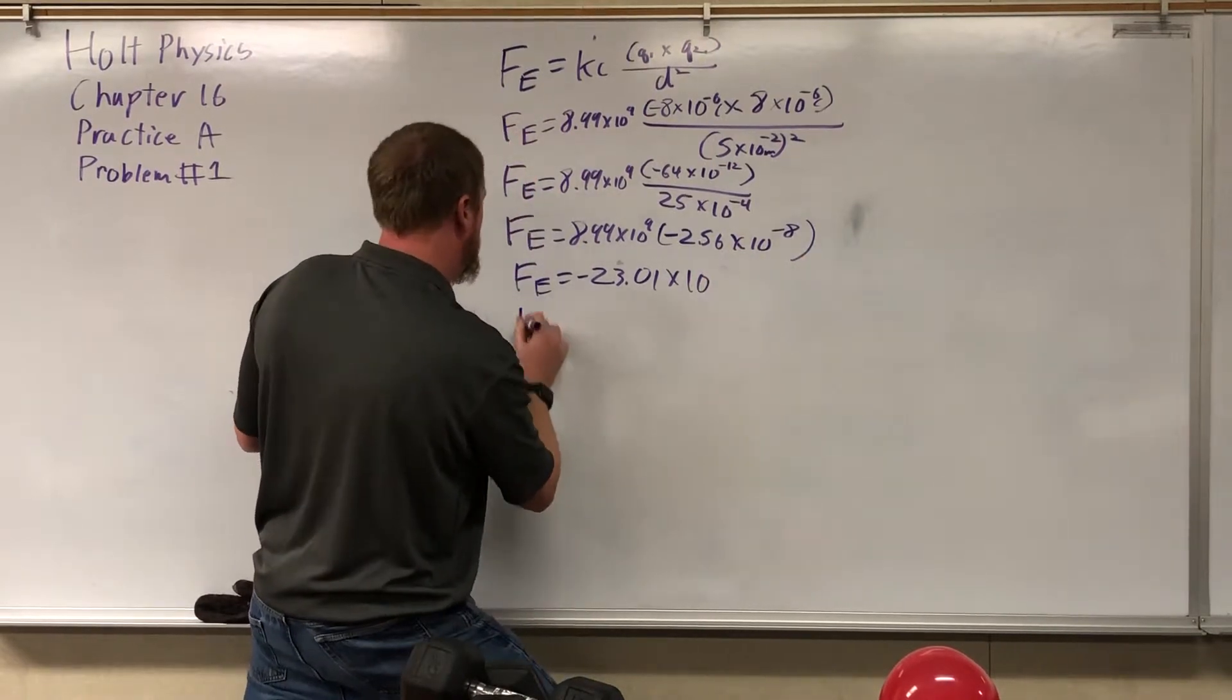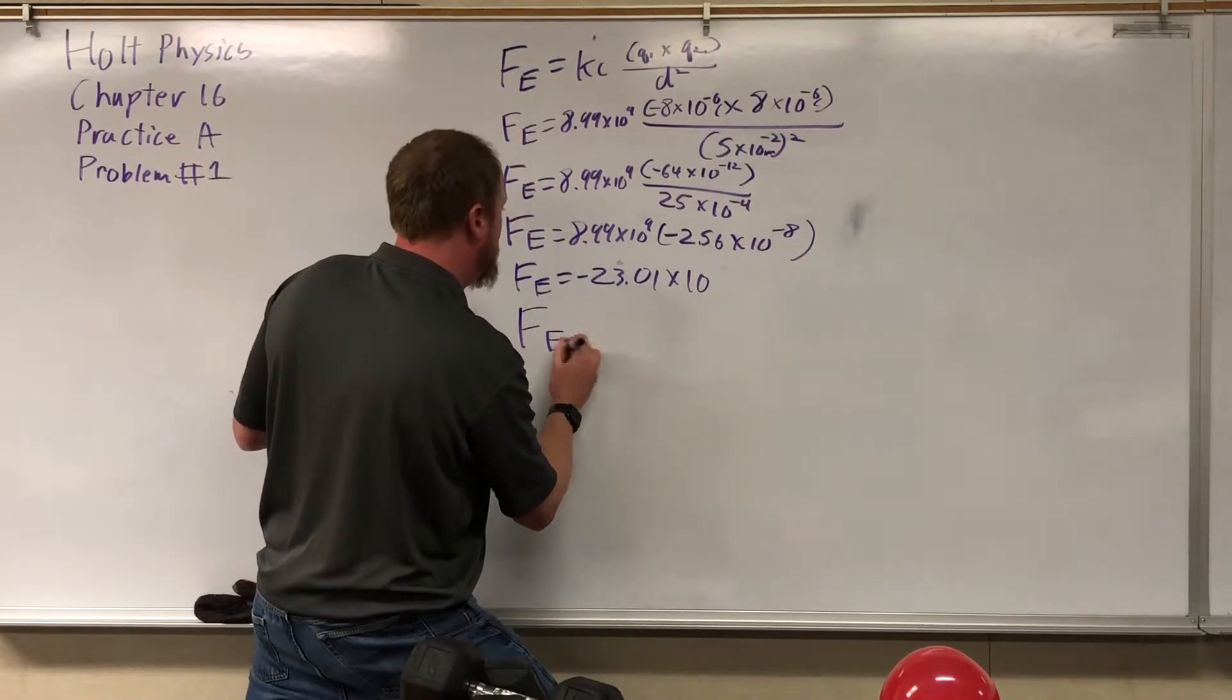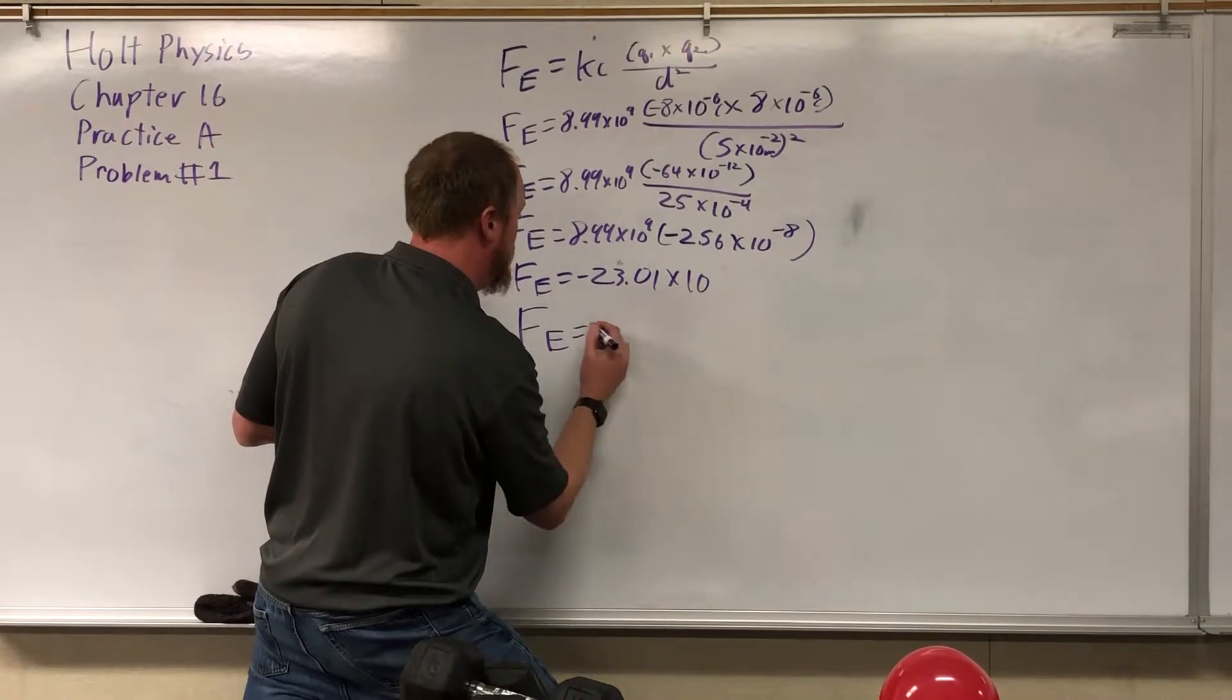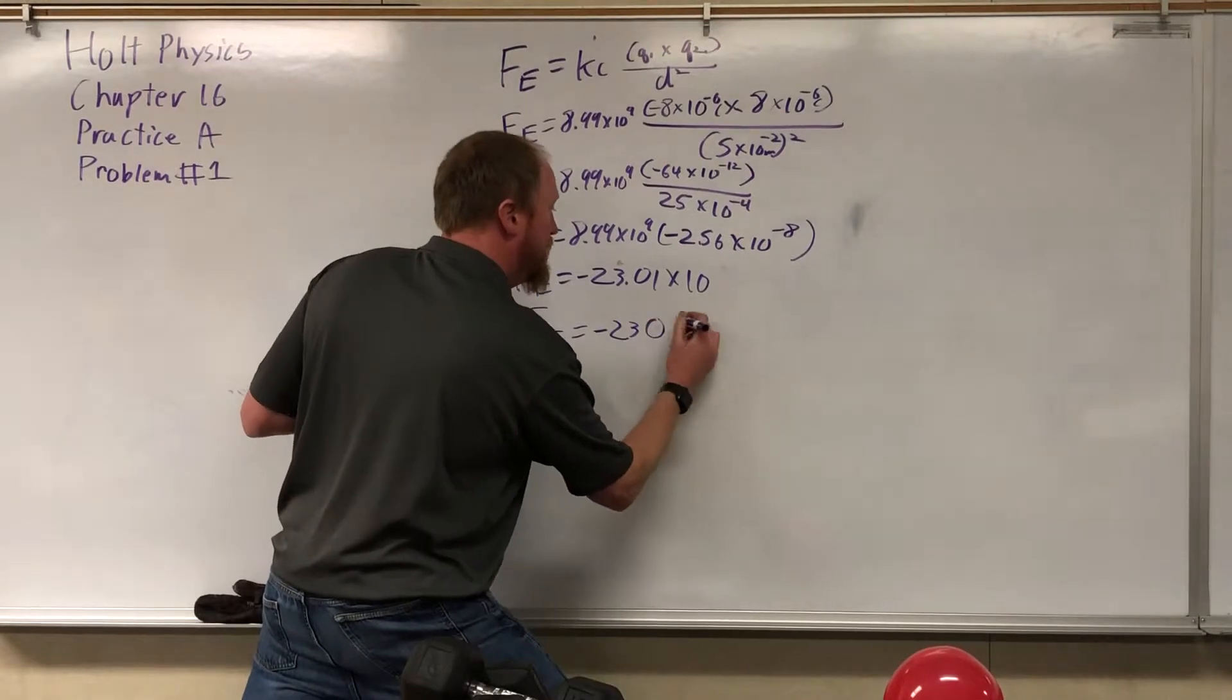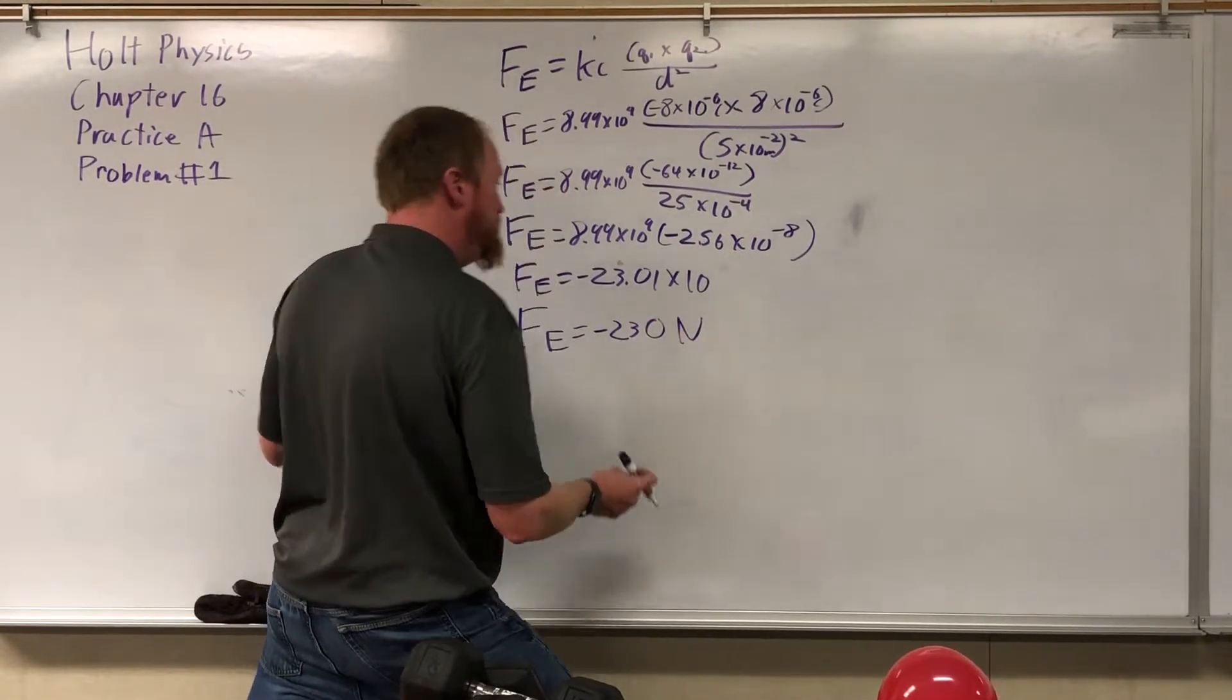All right. And we just do this. F_E is equal to just move the decimal point over one. So it's negative 230. So it's an attractive force of 230 newtons.